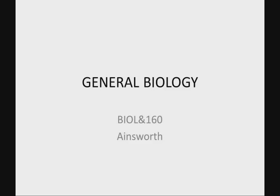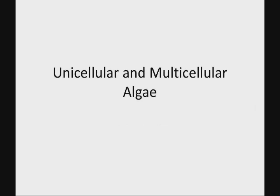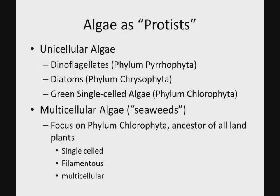Let's look at the last two groups of protists — unicellular and multicellular algae. As we look at algae as protists, we have to realize that sometimes taxonomists don't put algae into kingdom Protista. Sometimes they're studied with kingdom Plantae. There are certain protists, specifically the phylum Chlorophyta, from which we think all land plants arose, so it makes logical sense in both ways.